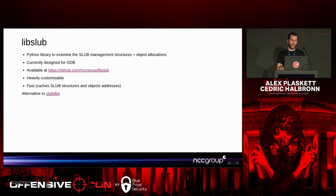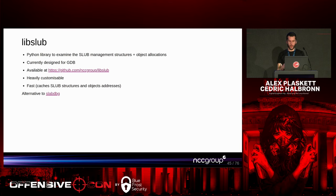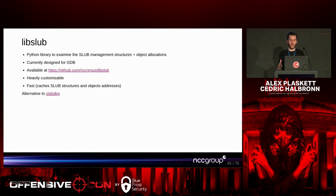Let's talk about LibSlub. LibSlub is a GDB Python library we wrote. The idea is to analyze SLUB management structures as well as object allocation. It's currently designed for GDB but can easily be adapted for LLDB. It's open source — we released it today on GitHub. It's designed to be very customizable: it prints as much as you want if you want to parse everything, or you can pass flags to print only certain parts. It's also fast, caching SLUB structures and object addresses so you don't have to parse all the structures every time you hit a breakpoint.